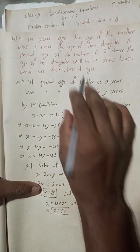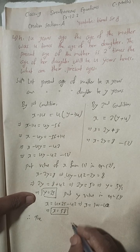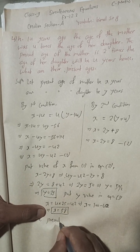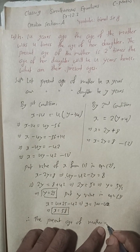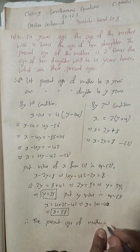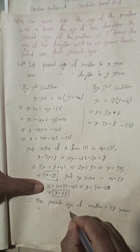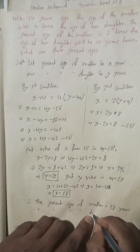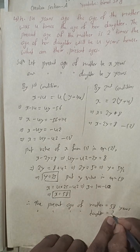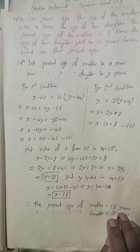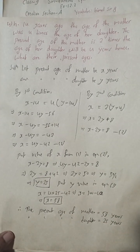So we got the ages. Therefore, the present age of the mother is X = 58 years, and the present age of the daughter is Y = 25 years. So the answer is 58 years and 25 years. This is the complete solution of question 4H.